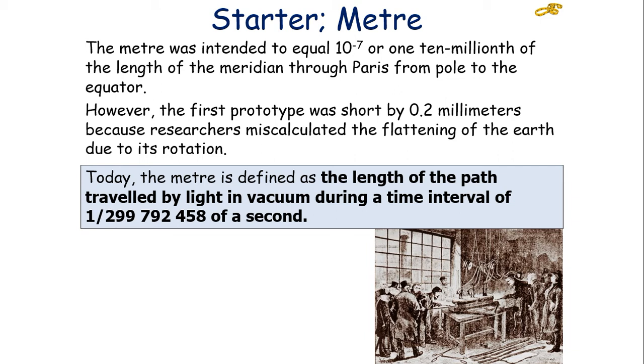The metre was therefore intended to be ten to the minus seven or one ten millionth of the length of the meridian through Paris from the pole to the equator. However, the first prototype was short by 0.2 millimeters because researchers miscalculated the flattening of the Earth due to rotation. In today's science, we define the metre as the length of the path of light traveled in a vacuum during a time interval of 1/299,792,458th of a second.